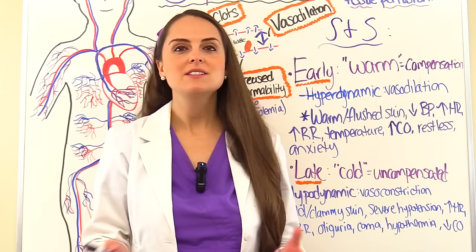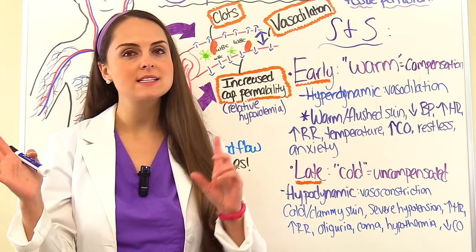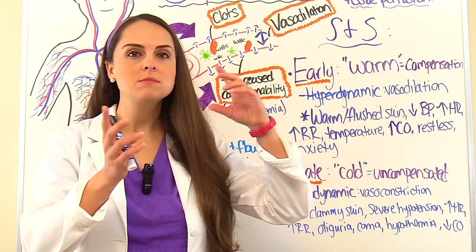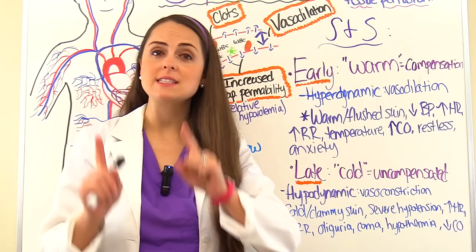Another thing to consider is the most common sites of sepsis — the GI system (specifically the abdomen), the respiratory system (the lungs), and the urinary tract are all common sites where sepsis develops. Now let's talk about the signs and symptoms of septic shock, looking at early versus late signs and symptoms, because they vary depending on what stage the patient is in.